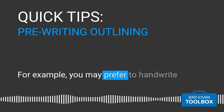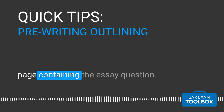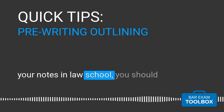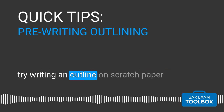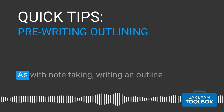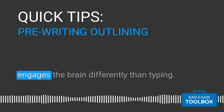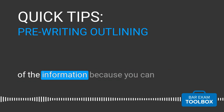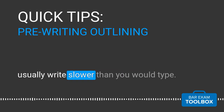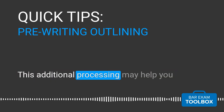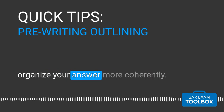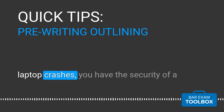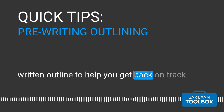As noted above, there are several different methods you can use to outline your answer. For example, you may prefer to handwrite a short outline at the bottom of the page containing the essay question. In particular, if you preferred handwriting your notes in law school, you should try writing an outline on scratch paper before you start typing an answer. Writing an outline engages the brain differently than typing — it often requires more cognitive processing because you can usually write slower than you type. This additional processing may help you organize your answer more coherently. Additionally, in the unlikely event that your laptop crashes, you have the security of a written outline to help you get back on track.